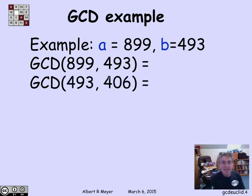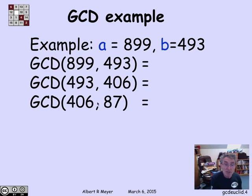That means that 899 and 493 have the same GCD as 493 and 406, as the original number b and the new remainder 406. But now, I can divide 493 by 406, get a quotient of 0 and a remainder of 87. So 406 and 87 have the same GCD.